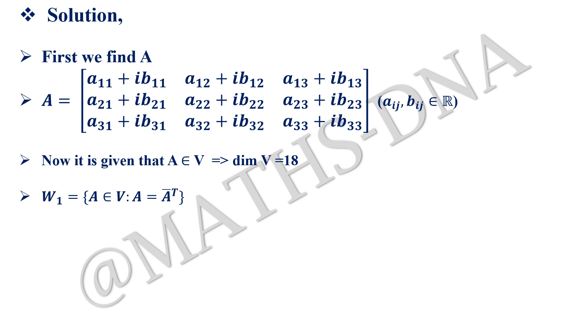Then W₁, it says that A belongs to V such that A is equal to A conjugate transpose. Now A conjugate transpose will be a₁₁ - ib₁₁, a₁₂ - ib₁₂. See, the rows and the columns are changing. It is given transpose also. Students make a mistake over here.